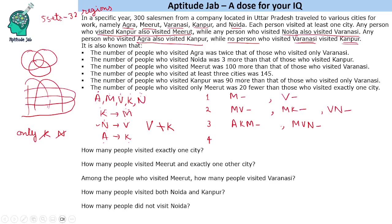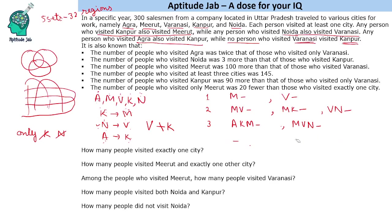For four cities: Varanasi and Kanpur cannot be together. If we try excluding Varanasi — A, M, K, N — Noida requires Varanasi, so not possible. If we try excluding Kanpur — A, M, V, N — Agra requires Kanpur, so not possible. We cannot have any valid combination for four cities. So out of 32 regions, only seven are valid. Instead of drawing a Venn diagram, use a table to find combinations of one, two, and three cities.